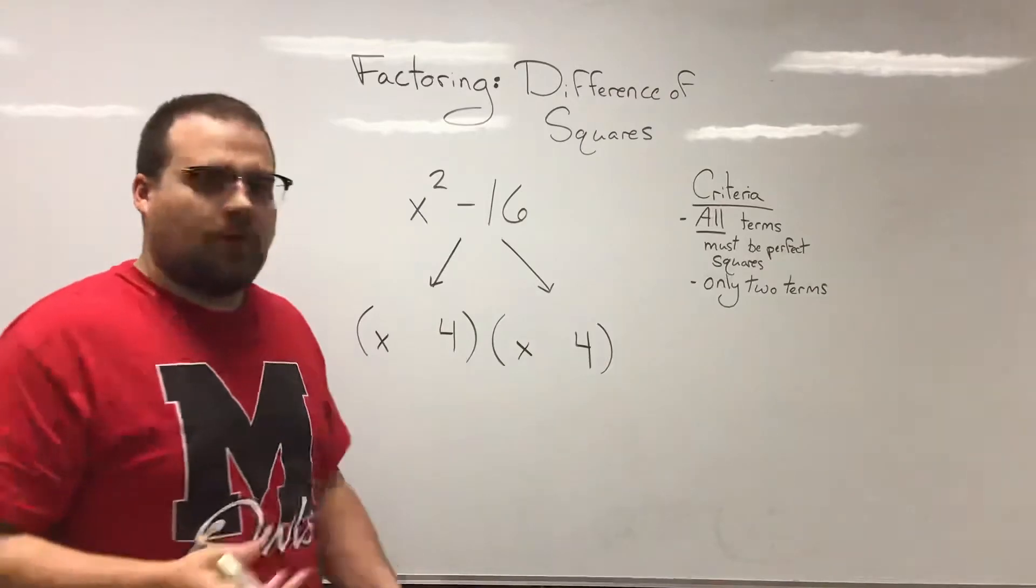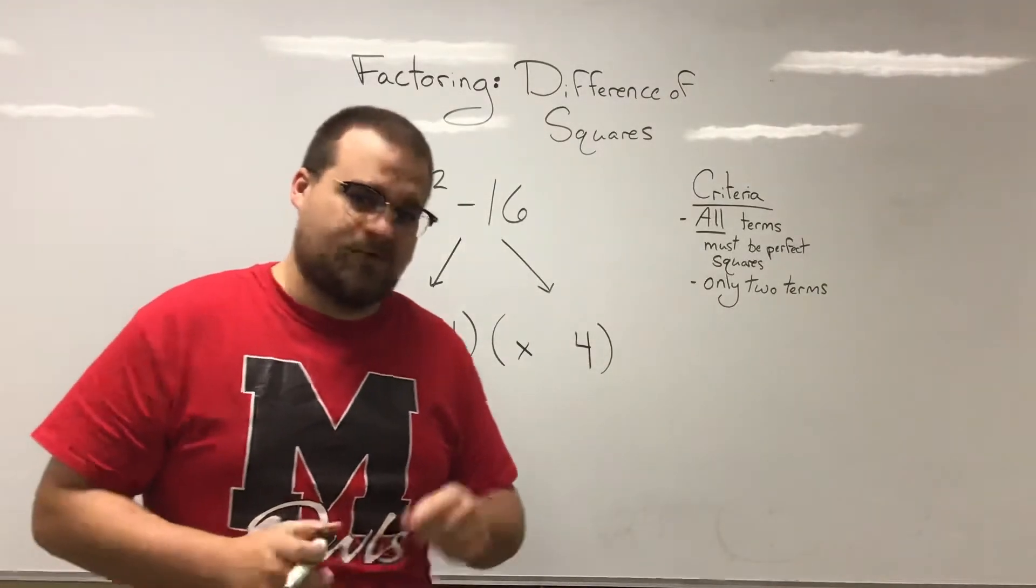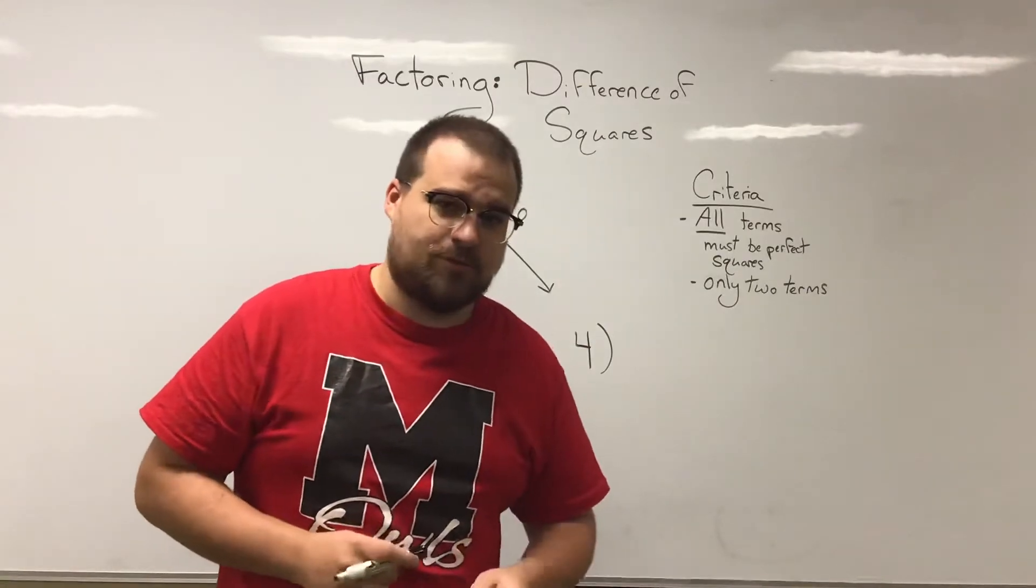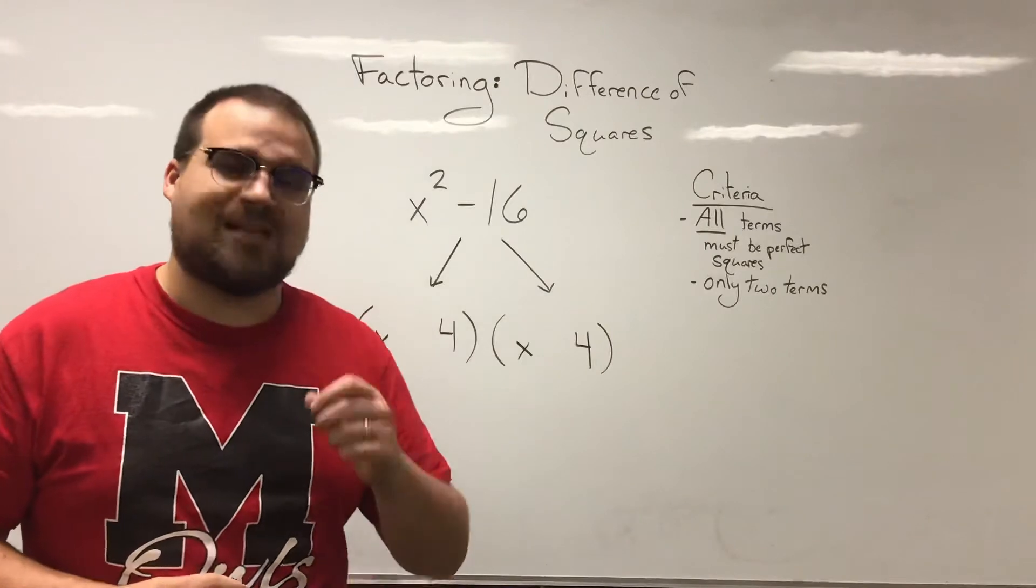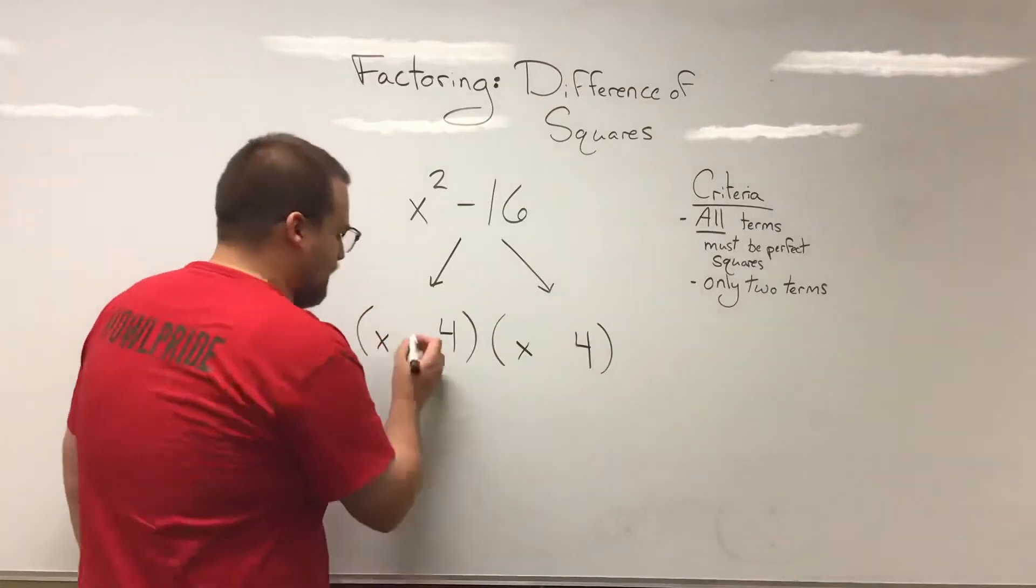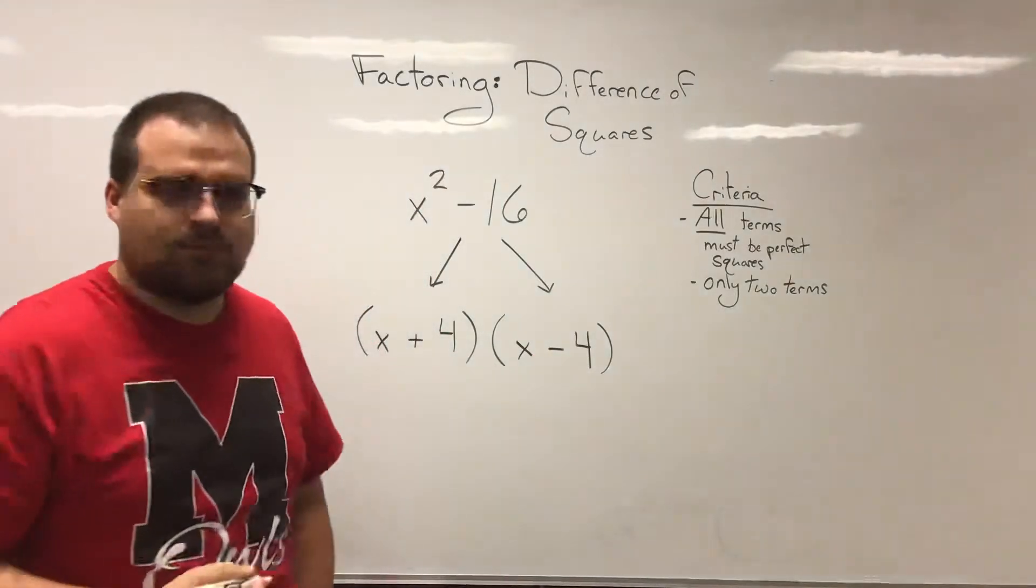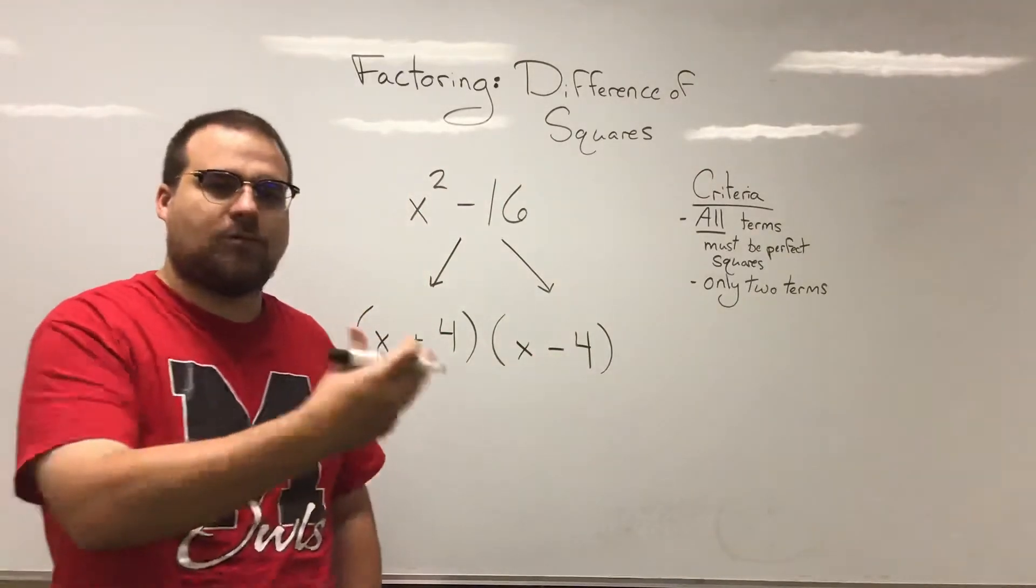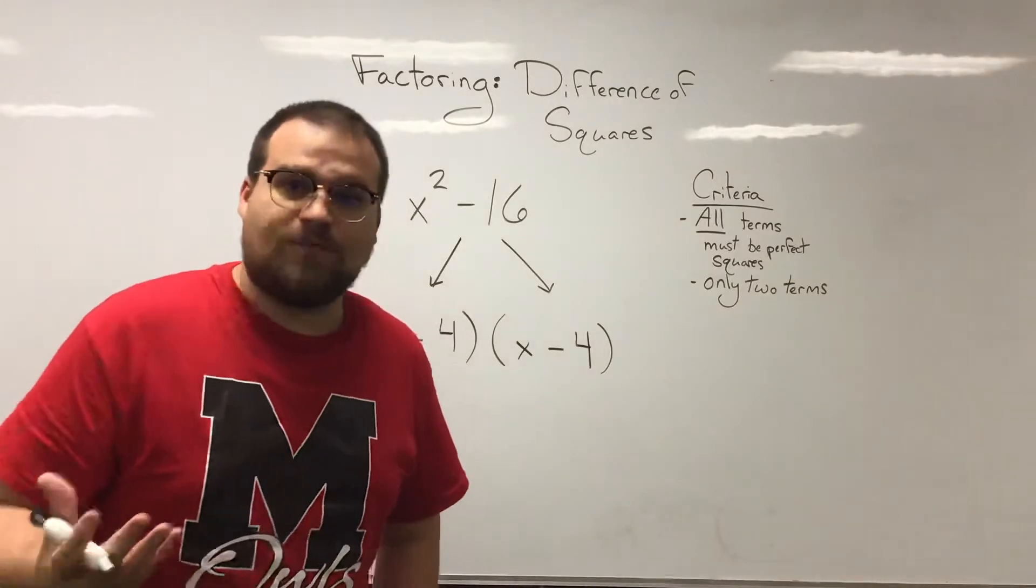Now you may be wondering what goes in between them though. We need a sign in there, right? When solving difference of squares, your binomials are going to have opposite signs. Meaning one of them is going to say plus, the other one is going to say minus. Just like that: x plus 4, x minus 4. And then we're done. We factored it.